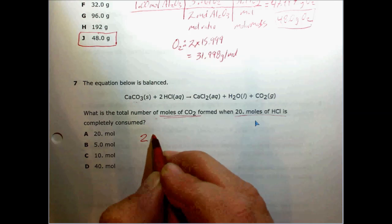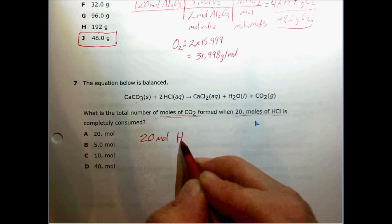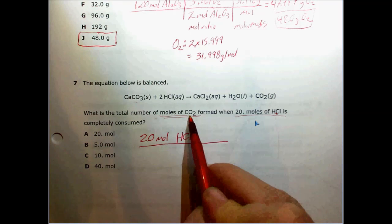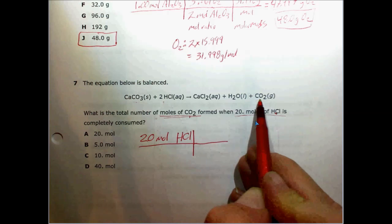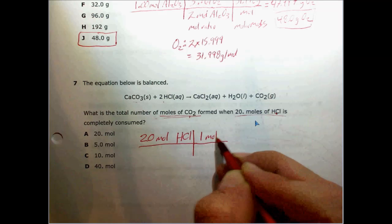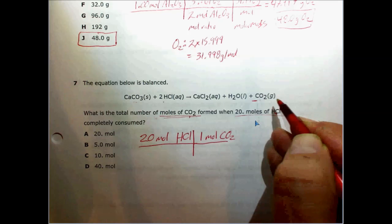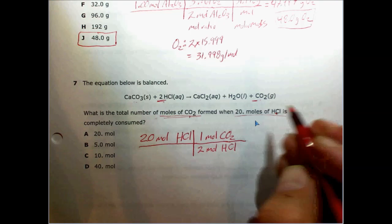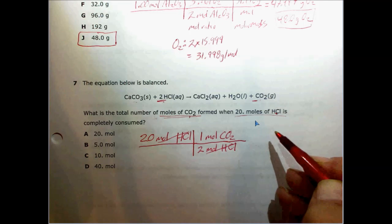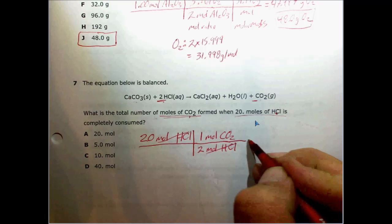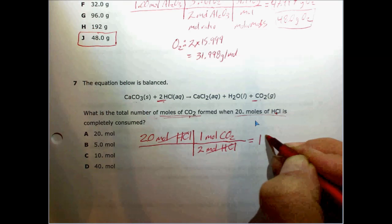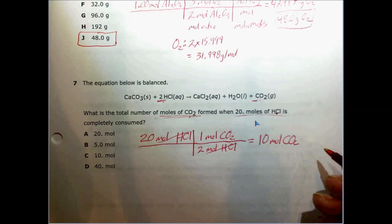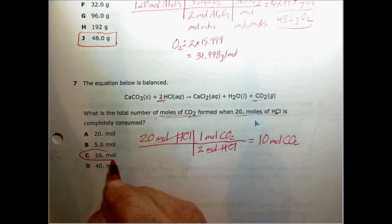Start with our basis of 20 moles of HCl. Then we look at the mole ratio of HCl to CO2. Since we want CO2, we put it on top: 1 mole of CO2 for every 2 moles of HCl. Moles of HCl cancel with moles of HCl. 20 times 1 divided by 2 equals 10 moles of CO2. So the answer is C.